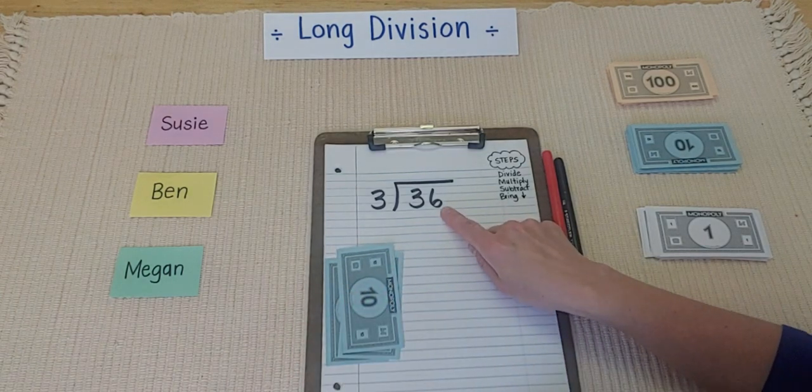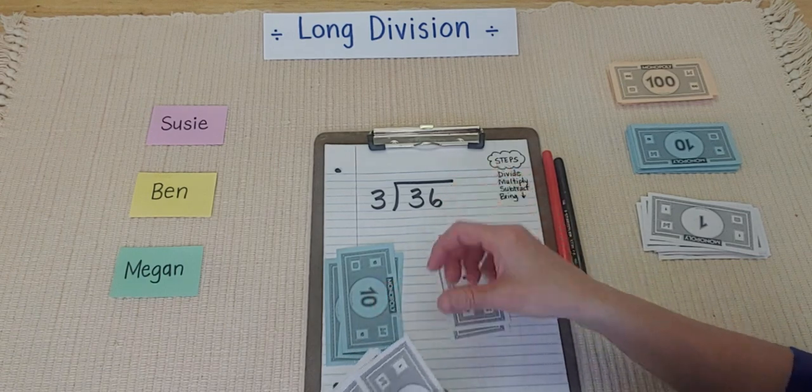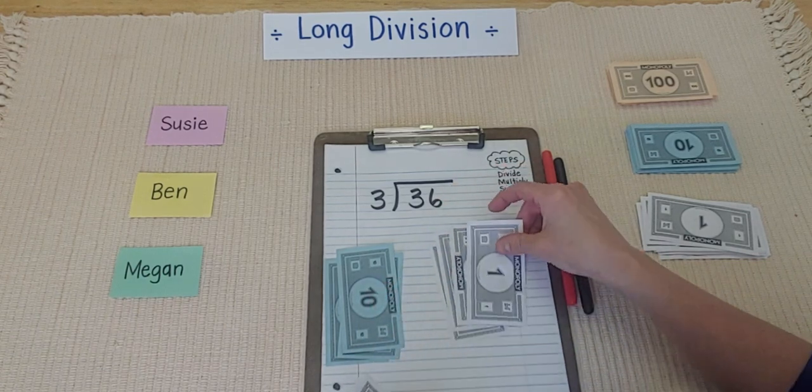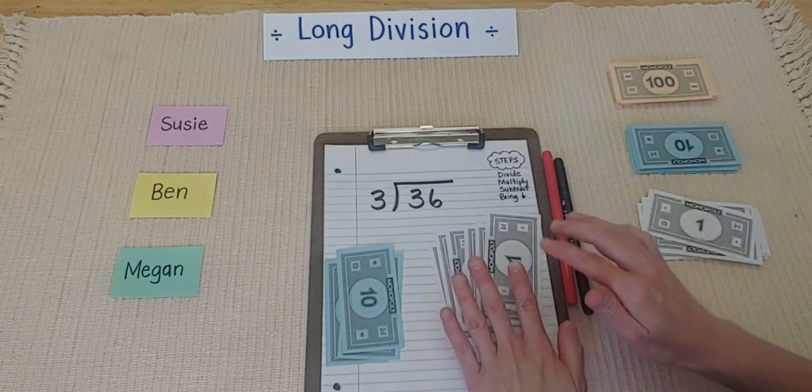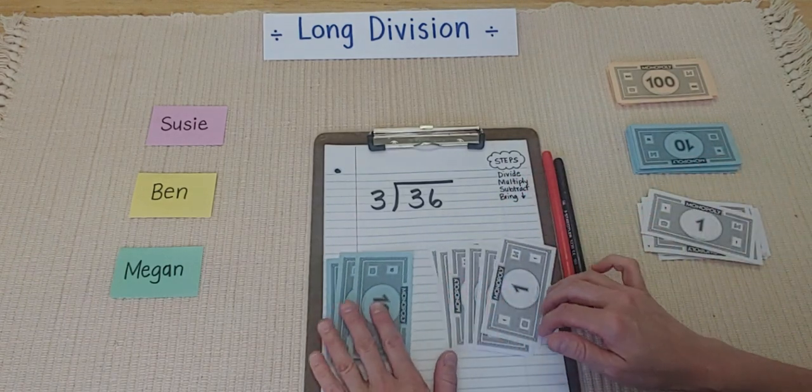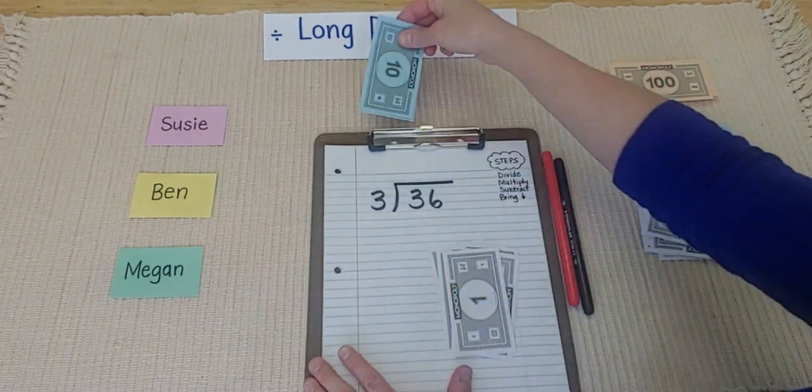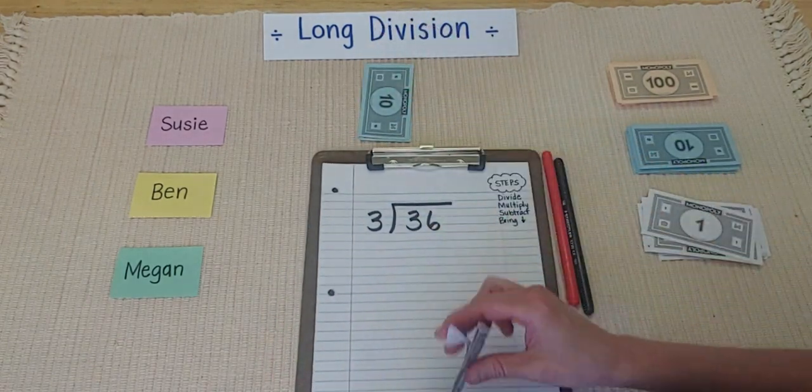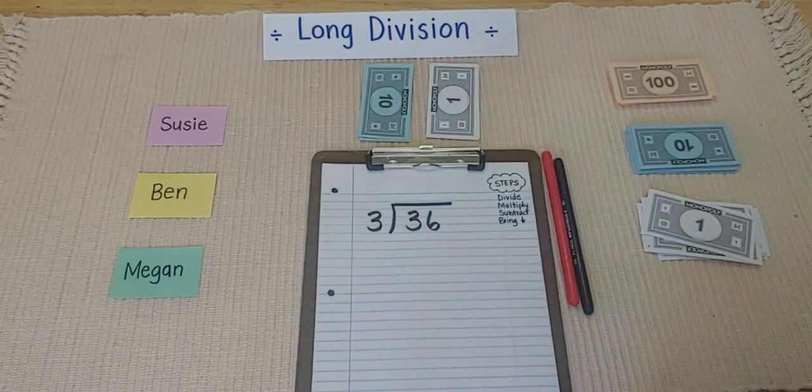And now I need 6 ones. 1, 2, 3, 4, 5, 6. 6 ones and 3 tens. It gives me $36 altogether. So, I have my money ready, and I'm going to start sharing in just a moment. I want to make sure everything's set up nice and neat.